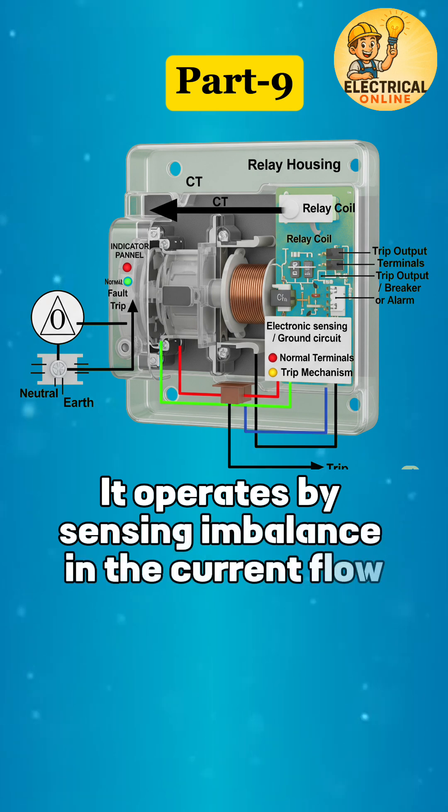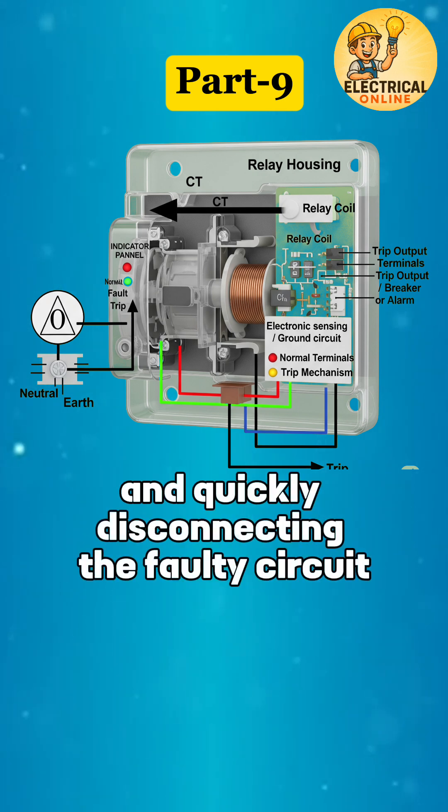It operates by sensing imbalance in the current flow and quickly disconnecting the faulty circuit to prevent hazards.